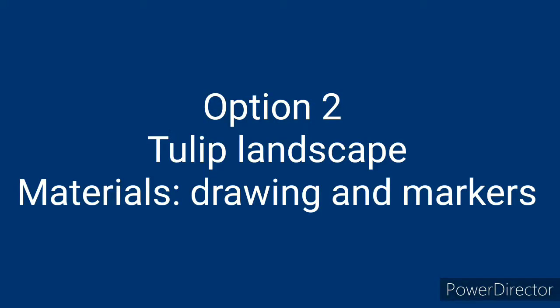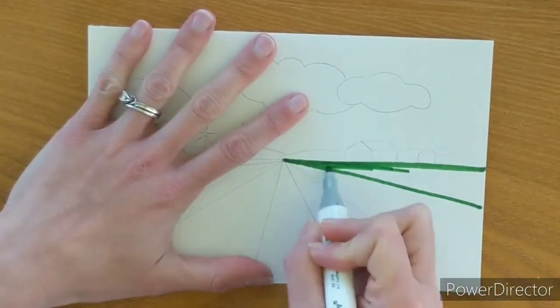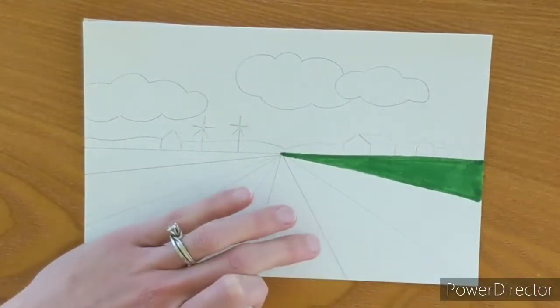Today you're going to add some color to your drawn perspective landscape. I'm using markers, but if you don't have markers you could use colored pencils or crayons.